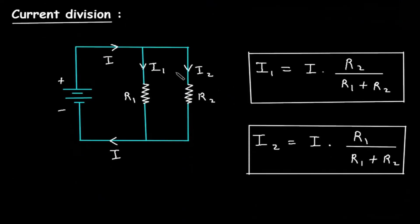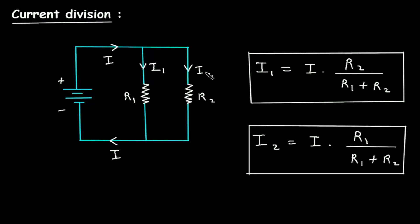Now, current division. Here we can see this is a parallel circuit; R1 and R2 are connected in parallel. This is total current I, I1 is the current through one branch, and I2 is the current through the other branch.